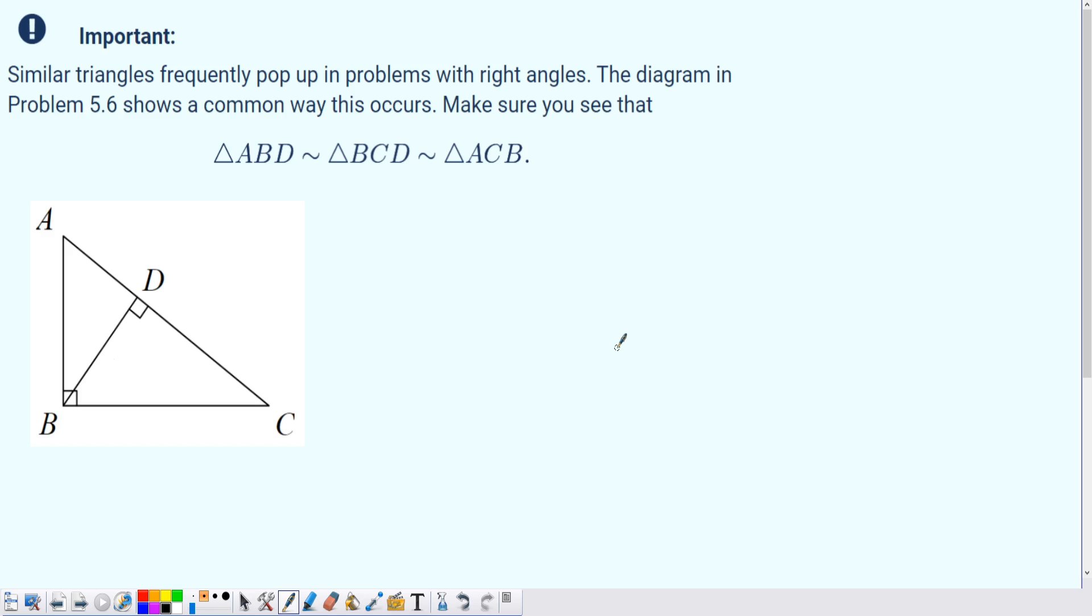Now we proved easily that ABD is similar to ACB and we did show that BCD is also similar, but how do we know that in fact these two must also be similar aside from the basic logic that if they're similar to the third thing they should probably be similar to each other? Let's actually demonstrate why.